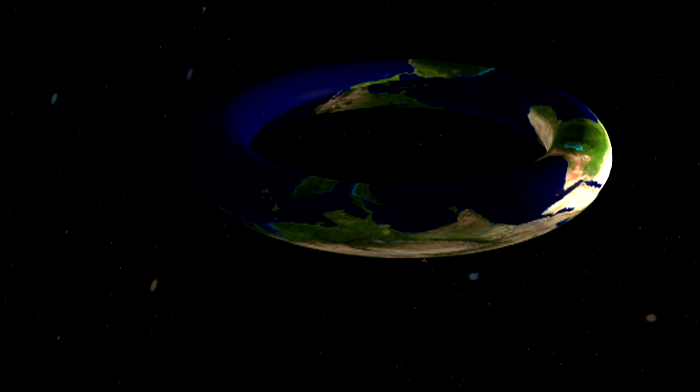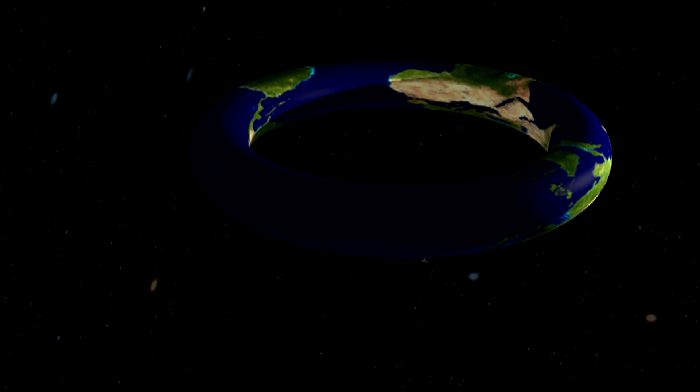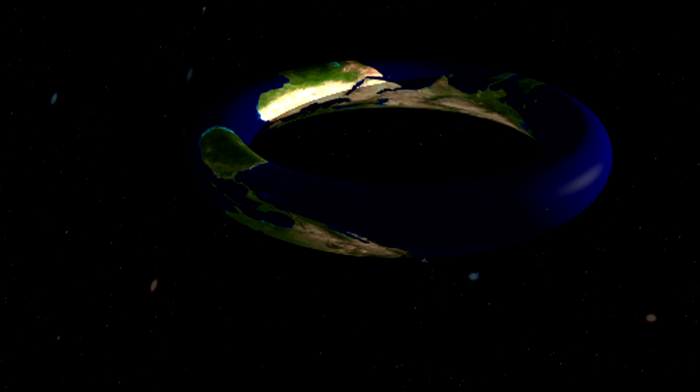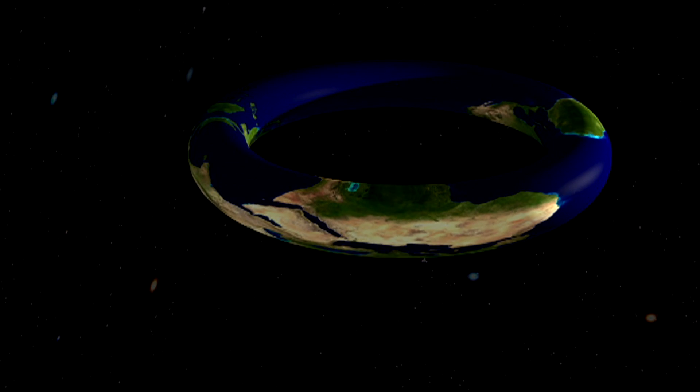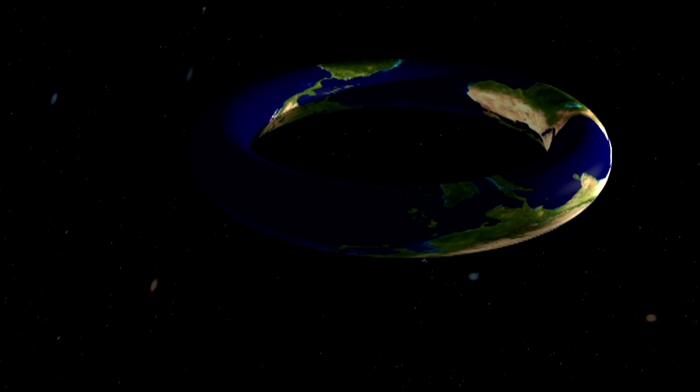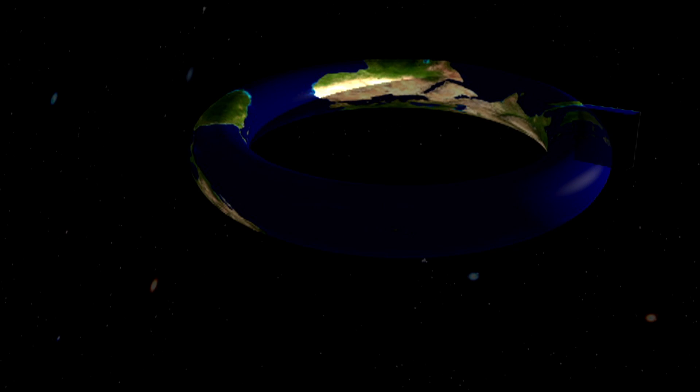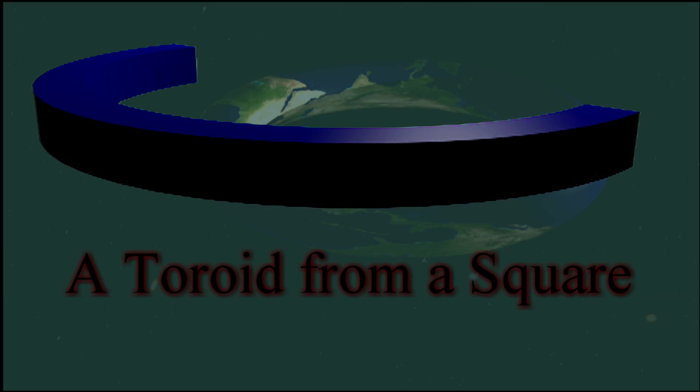So we return today to the Megastructures series, a bit unexpectedly, for a look at Hoop Worlds, hypothetical megastructures that are shaped like donuts or hoops. Donut Planet seems insufficiently dignified, so the term Hoop World has stuck. I've heard them called toroidal worlds too but that's not entirely accurate.